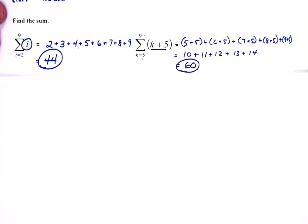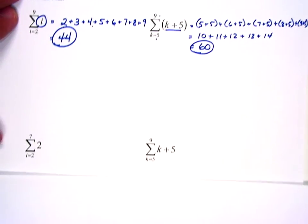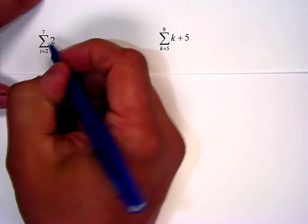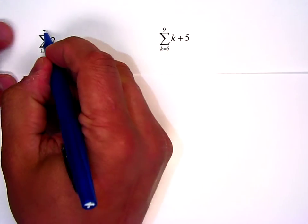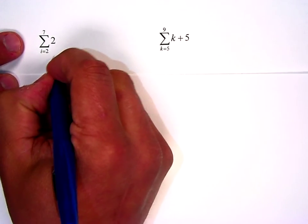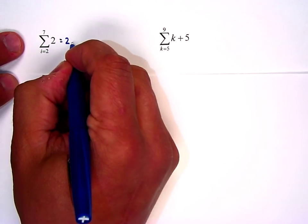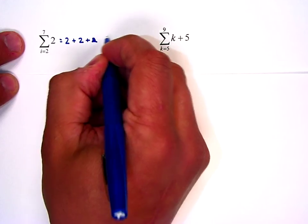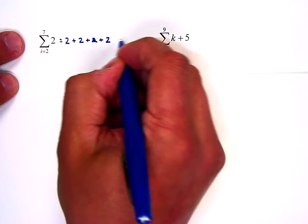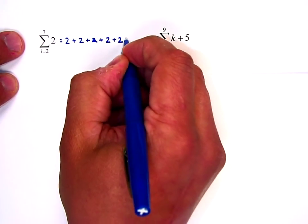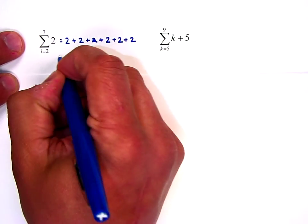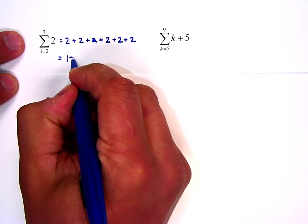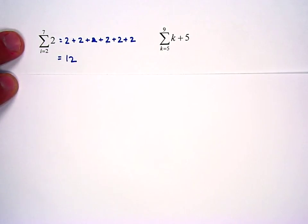We simply plug those numbers in as we go through. Here's another one. This one's kind of tricky. The sum of 2 from the second term to the seventh term. Well, the second term is 2, third term 2, fourth term 2, fifth term 2, sixth term, 7th term. And so now 2, 4, 6, 8, 10, 12, we just add those up.